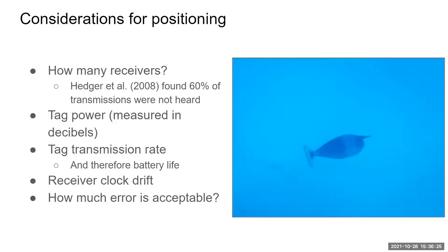How much error is acceptable? When using technology to track animals underwater it's amazing we can do it at all, so of course there will be error. We can still get close and semi-accurate positions from calculations like centers of activity. But analysts need to think about this before designing studies and ask: at what point are our positions accurate enough for our purposes?